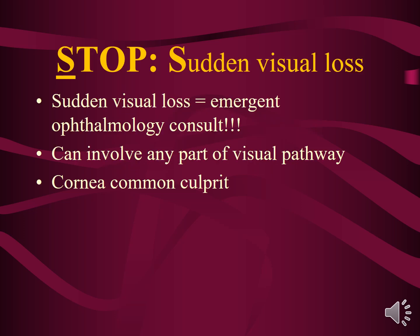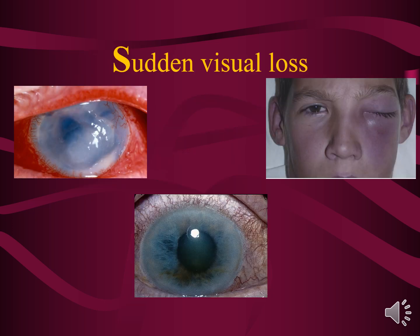The first thing to think about is sudden visual loss. Any patient with sudden visual loss deserves an emergent ophthalmology consult. Sudden visual loss can involve any part of the visual pathway, but with red eye, the cornea is often involved. A classic example is a corneal ulcer — you can see pus on the cornea, commonly caused by sleeping in contact lenses. Don't worry about the details; causes of red eye will be reviewed in the future.